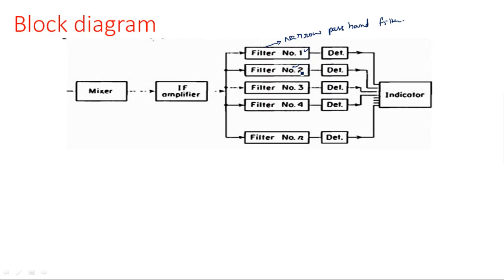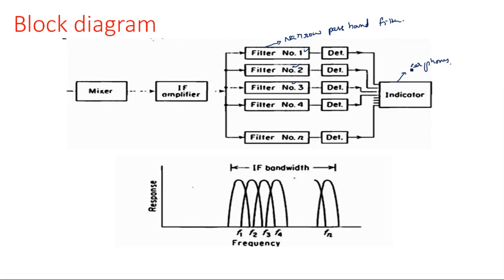Similarly, the higher cutoff frequency of the second filter equals the lower cutoff frequency of the third filter, and so on. The filter cutoff frequencies must be matched one with another so that no frequency will be missing. The output of each filter passes through individual detectors, and the output of the detectors is given to indicators — the indicators being a pair of earphones.